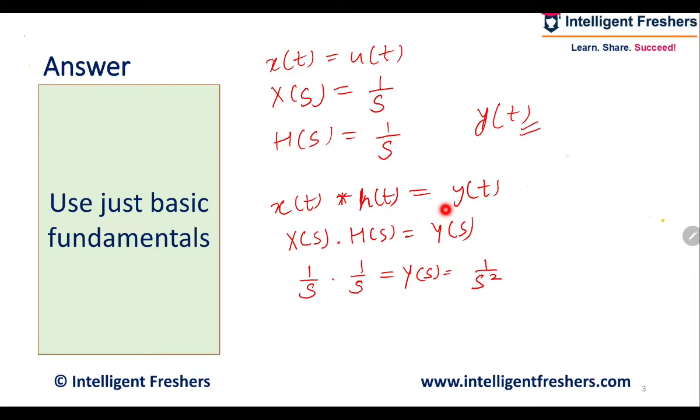So Y(s) is 1 by s squared, so y(t) will be t into u(t).